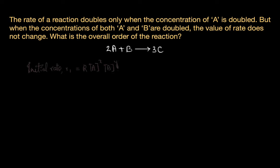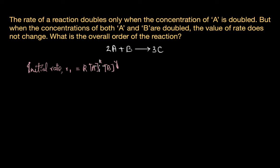The initial rate can be written as R1 is equal to K into A power X times B power Y, where X is the order of the reaction with respect to A and Y is the order of the reaction with respect to B.